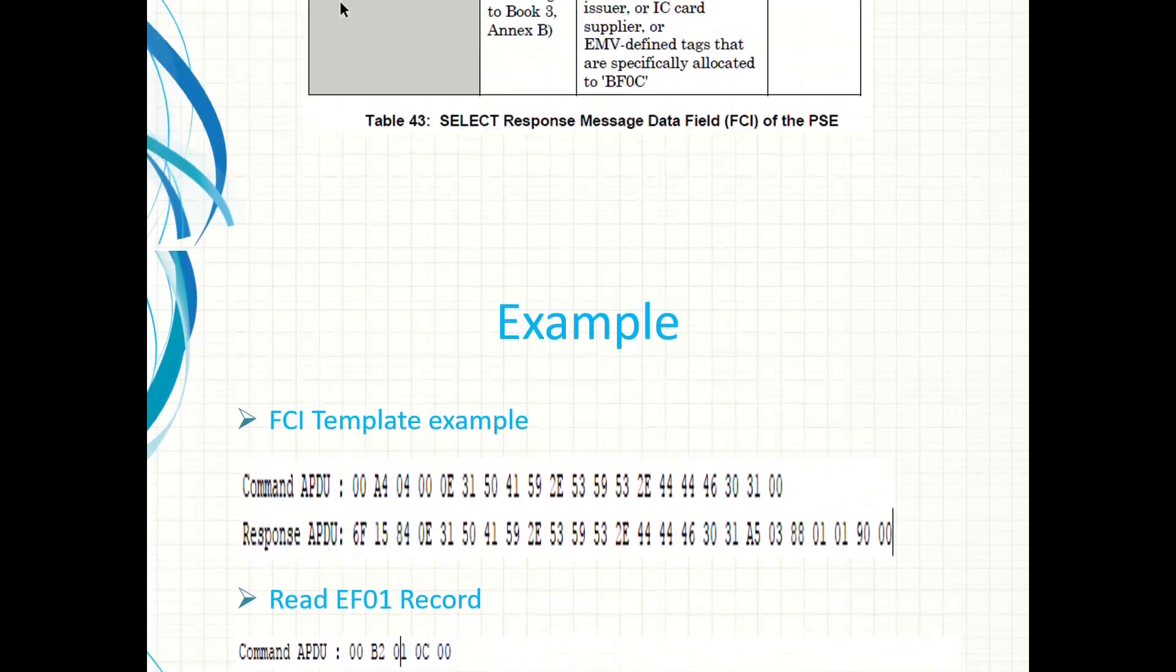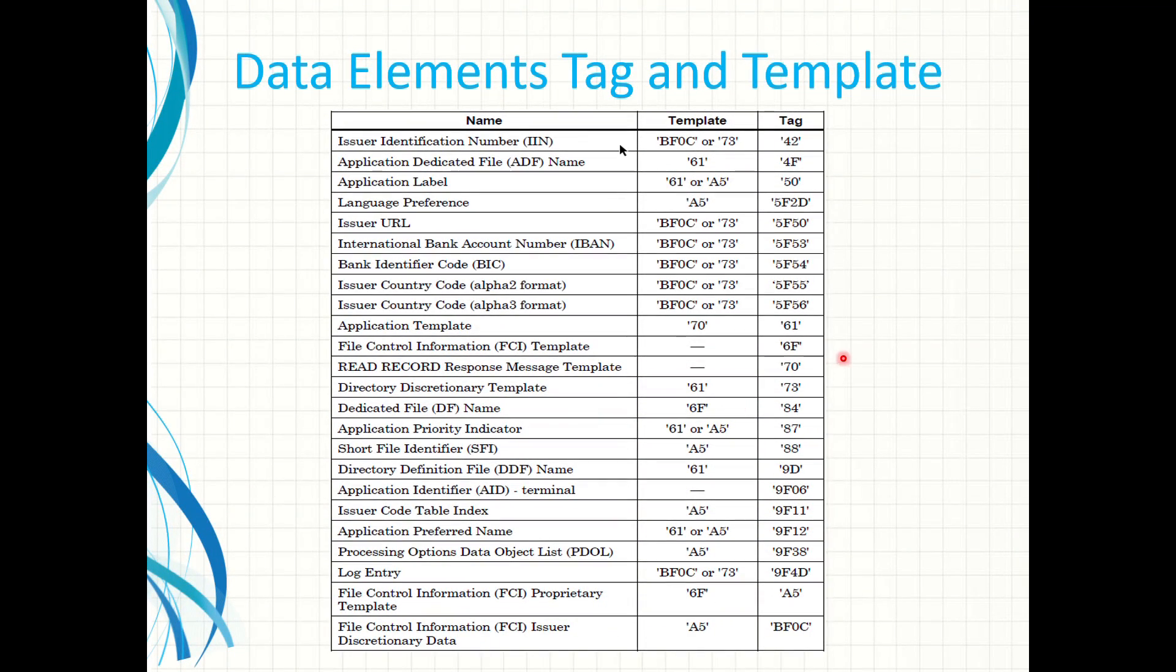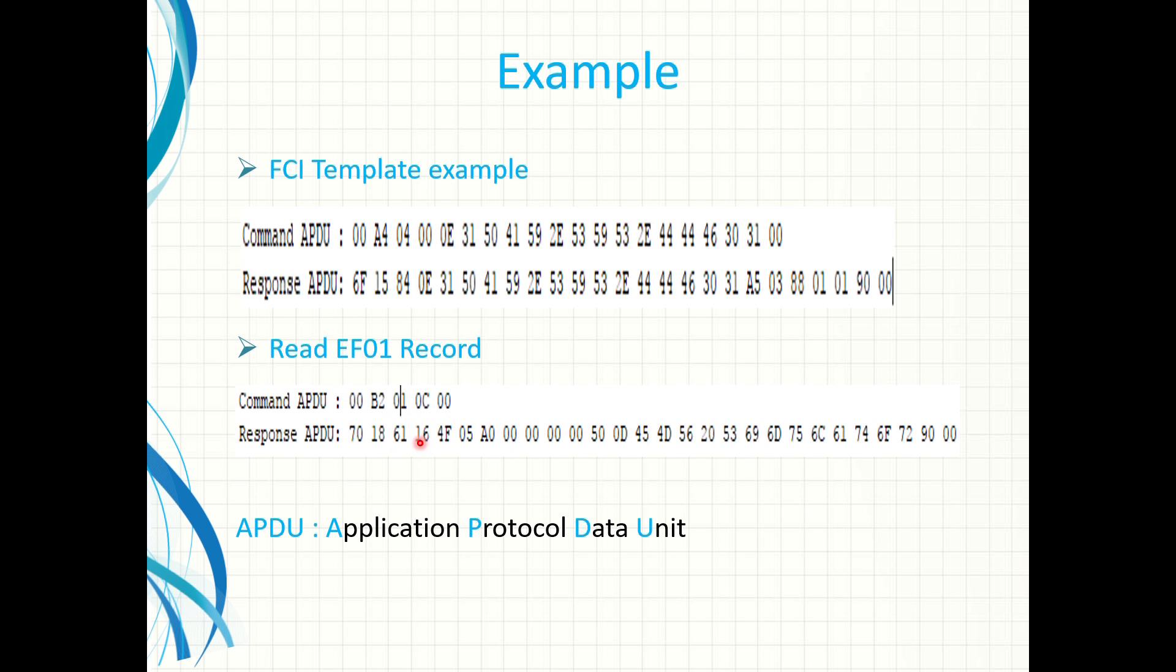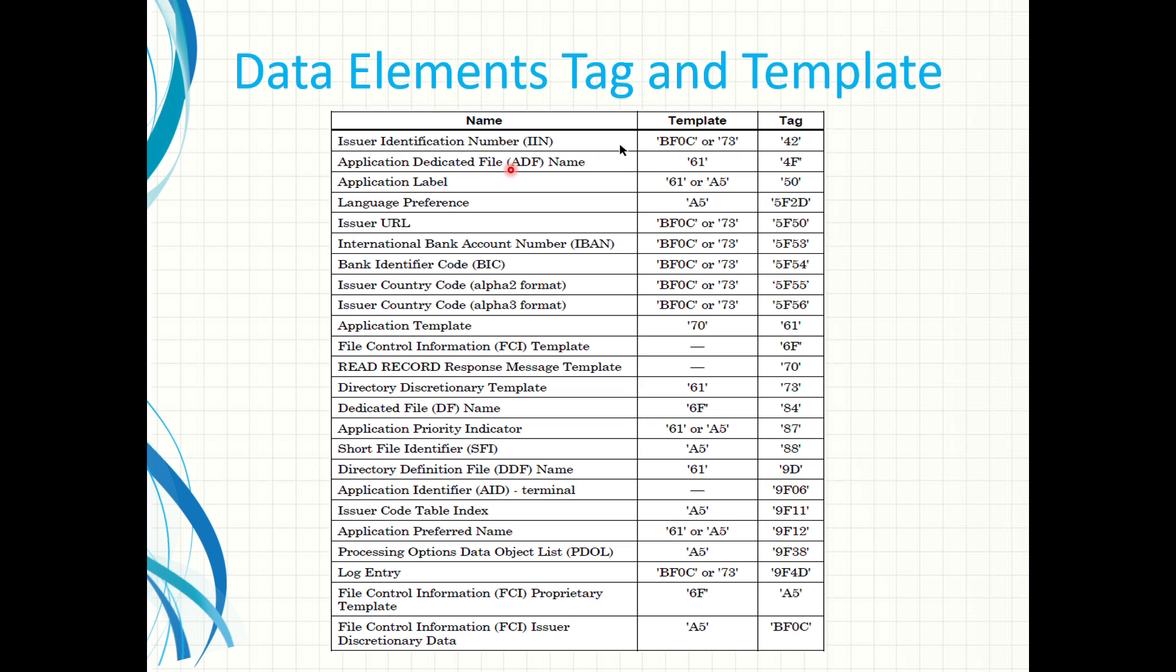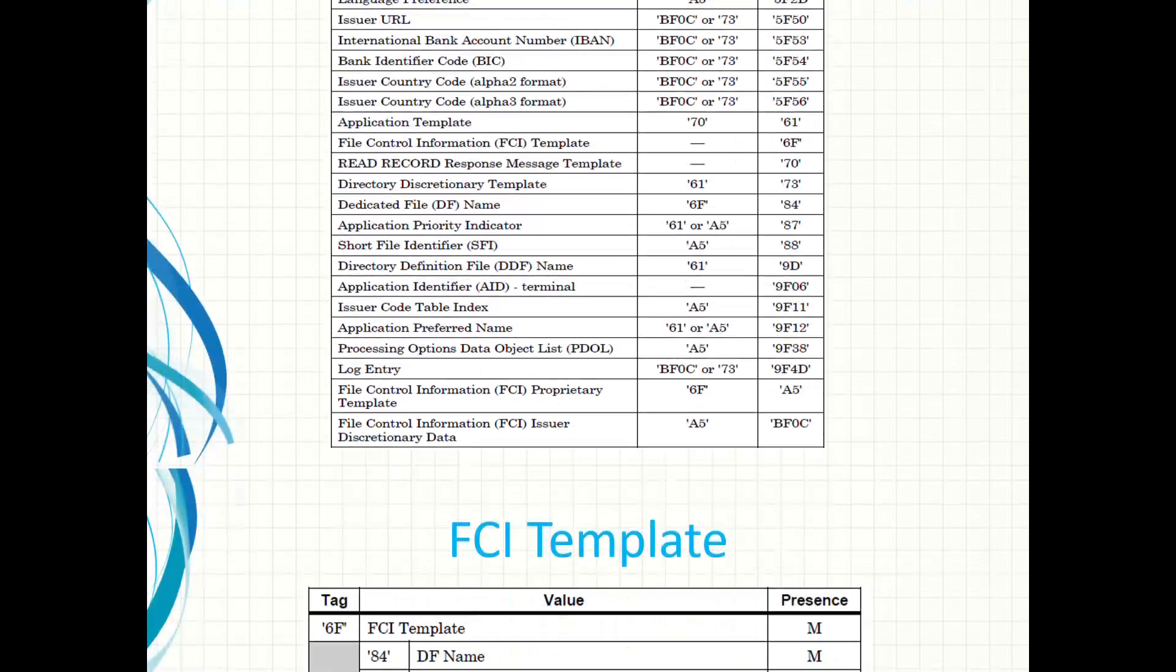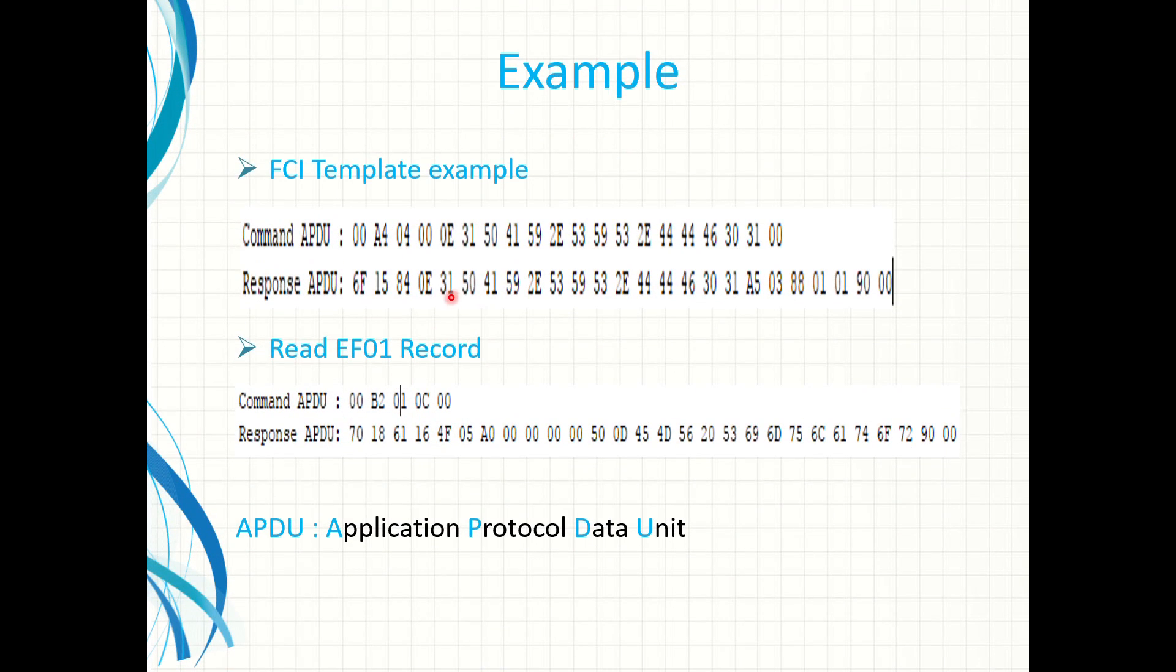And going back to the table, 61 should be the application template. Here it is. 16 hex, it has a length of 16 hex, that is 20 bytes. And the value contains a tag 4F. 4F should be the application dedicated file name. And the length is 5 and the following 5 bytes are the values. So here we see the ID of the application: A0 00 00 00 03.